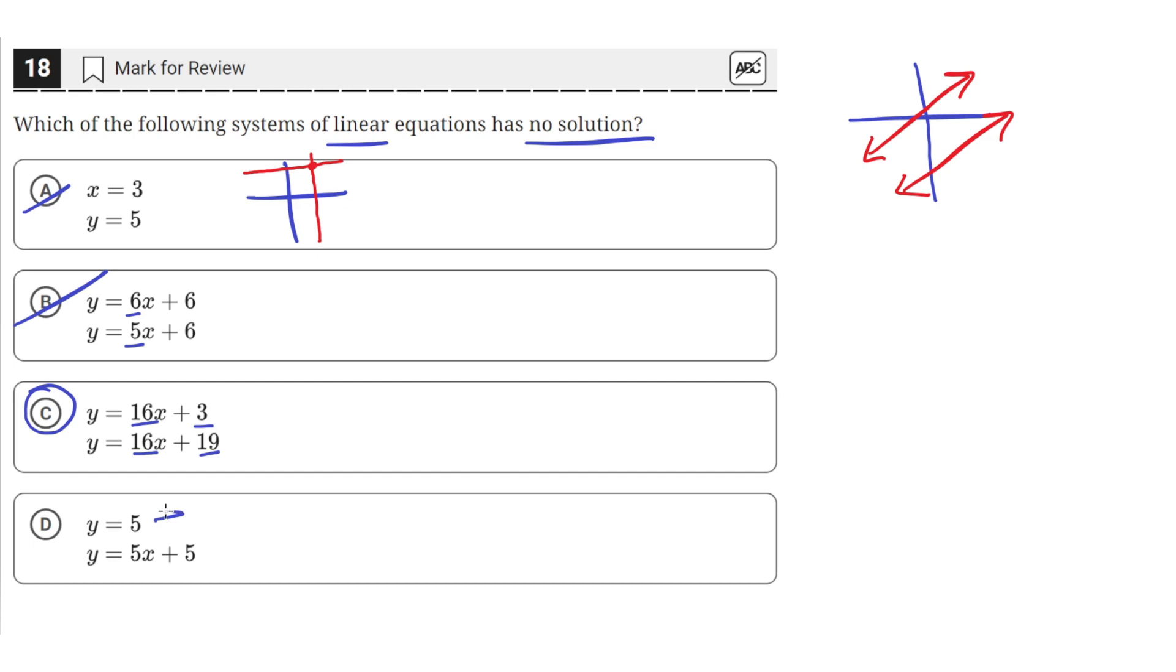D, the first equation here has a slope of 0, and the second equation has a slope of 5. So they have different slopes, so D is incorrect either. So C is the only one that has no solution, since the slopes are the same but the y-intercepts are different.